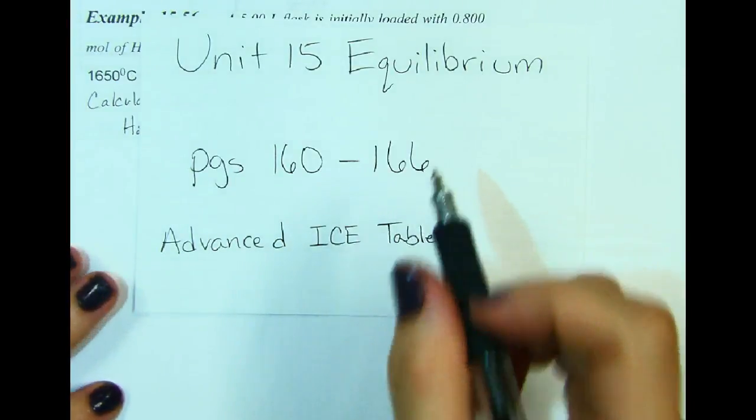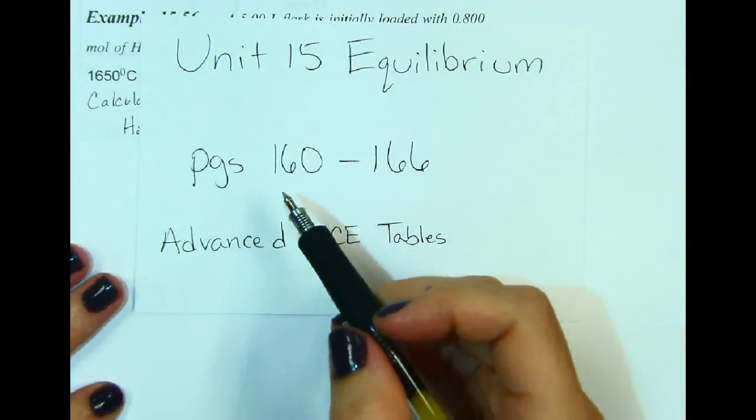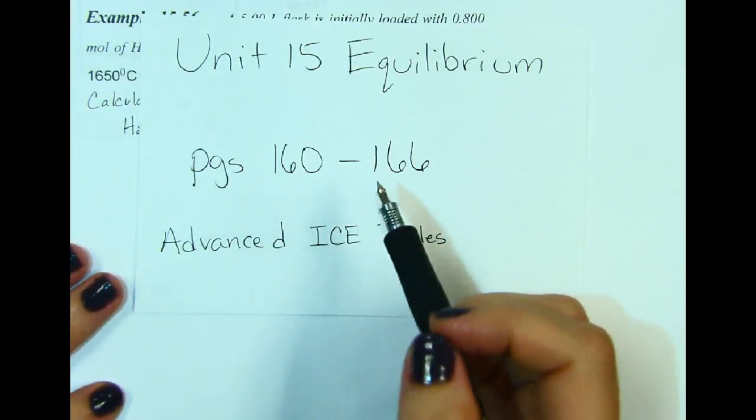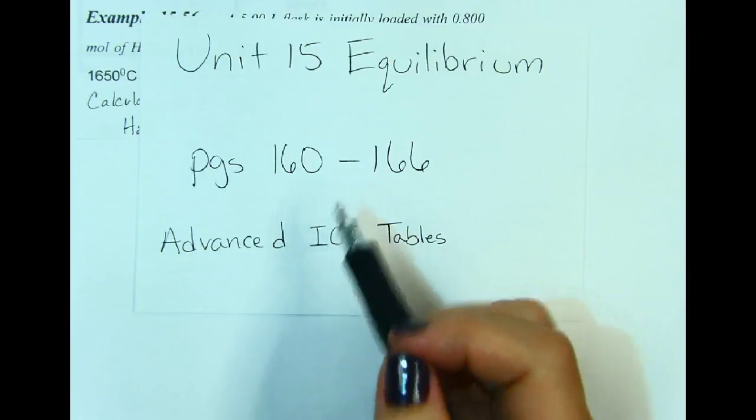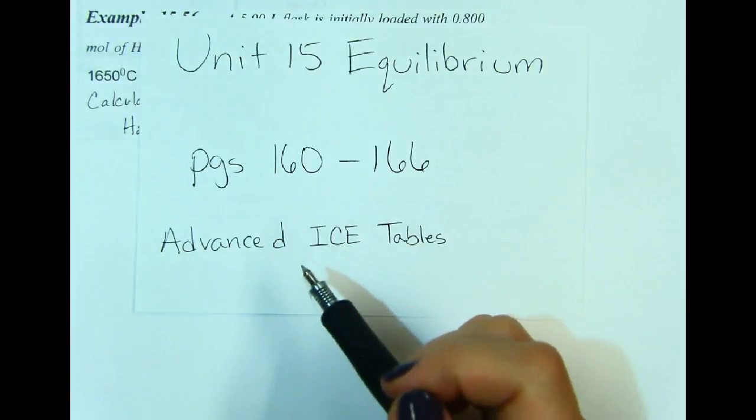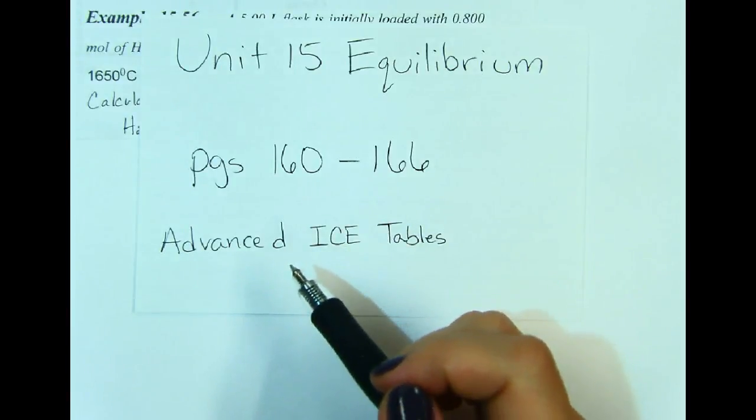Unit 15: Equilibrium. This is pages 160 to 166. This is going to be advanced equilibrium calculations.